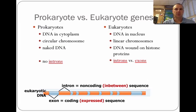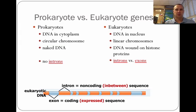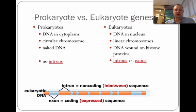Prokaryotic and eukaryotic cells differ in that prokaryotes' DNA is found in the cytoplasm, while eukaryotes' DNA is found in the nucleus. Prokaryotic chromosomes are circular, while eukaryotic chromosomes are linear. Prokaryotes have naked DNA, while eukaryotes roll their DNA up around histones — that's how they bunch them all together. Prokaryotes don't have introns, whereas eukaryotes have both introns and exons.